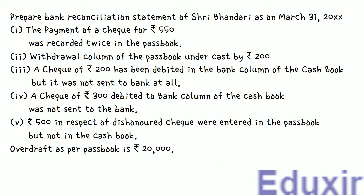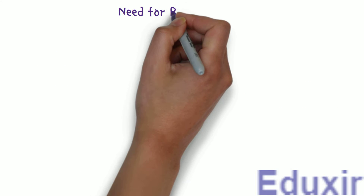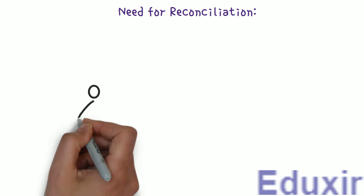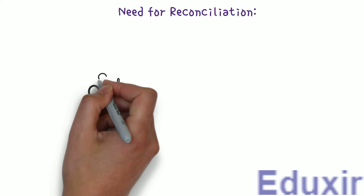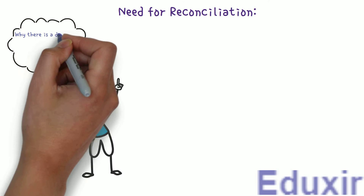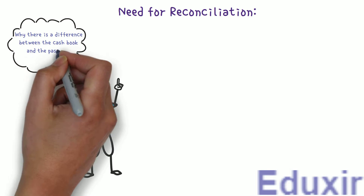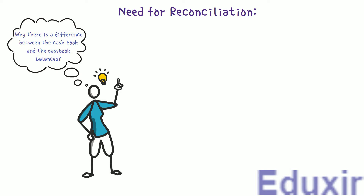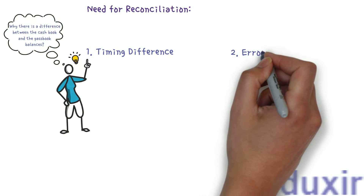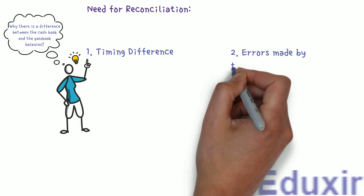Before we proceed with the analysis of these particulars, let us first recap about why there is a need for reconciliation. By preparing the bank reconciliation statement, we get an idea about why there is a difference between the cashbook and the passbook balances. The difference could be due to timing difference in recording the transaction, or errors made by the business or the bank.